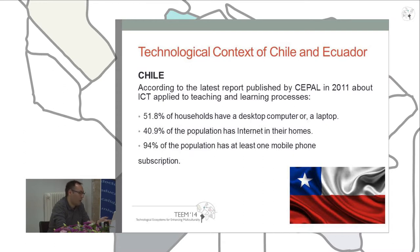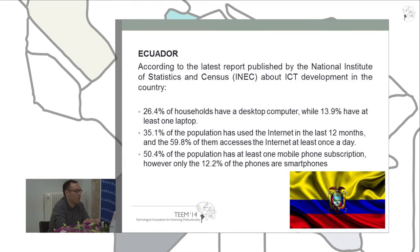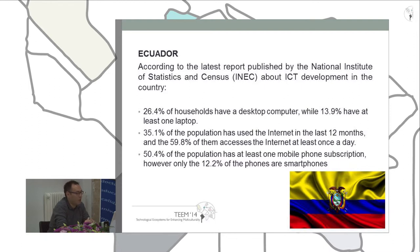On the other hand, in Ecuador, according to the latest report published by the National Institute of Statistics and Census about ICT development in the country, 26% of households have a desktop computer. 55% of the population has used the internet in the last 12 months and 59% access the internet at least once a day. 50% of the population has at least one mobile phone subscription; however, only 12% of those phones are smartphones.